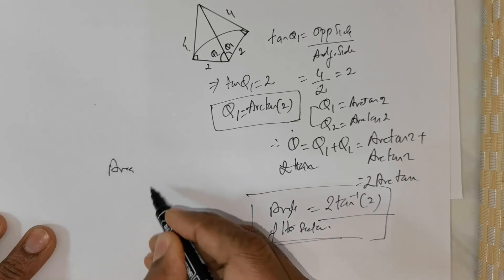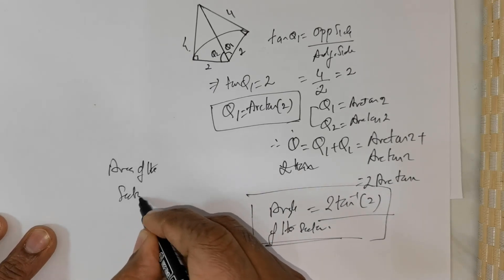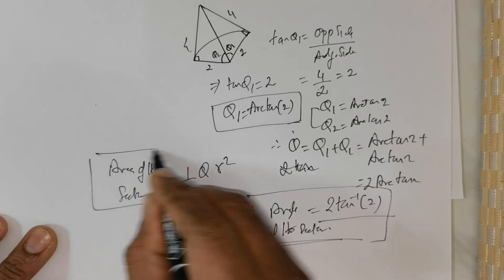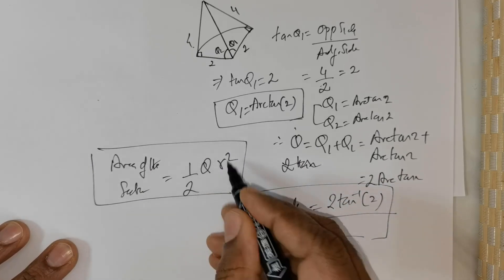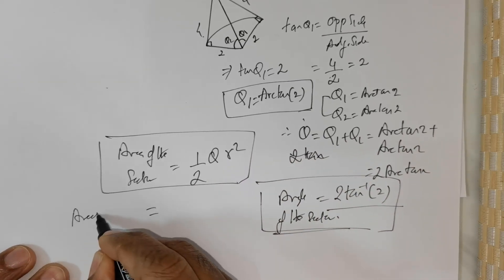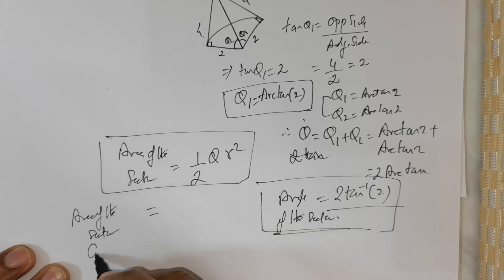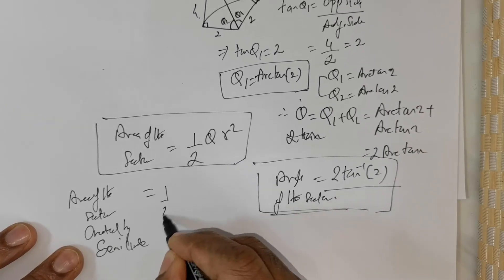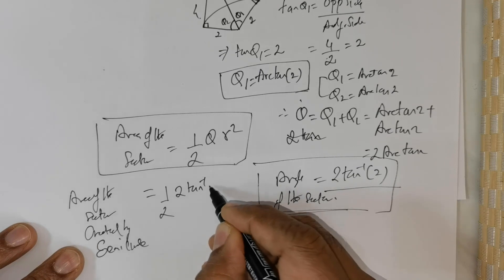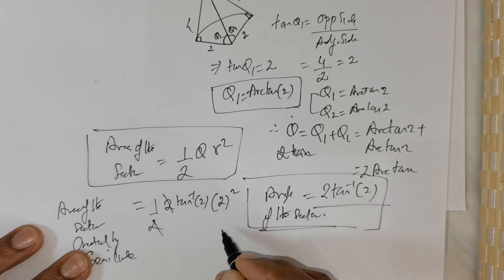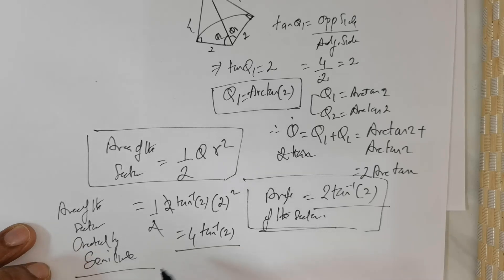What I wish to do is substitute into the area of the sector formula. Area of the sector = ½·θ·r². So the area of the sector created by the semicircle = ½ × 2·tan⁻¹(2) × 2² = 4·tan⁻¹(2). This is the area of that sector.